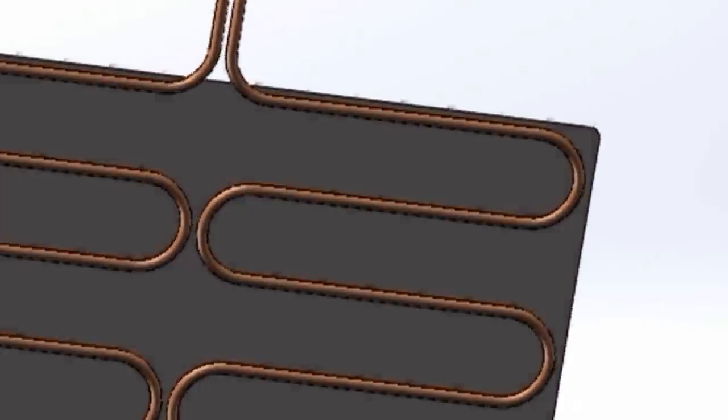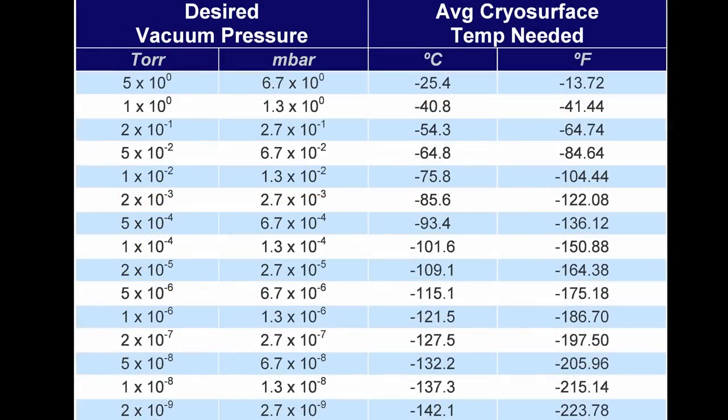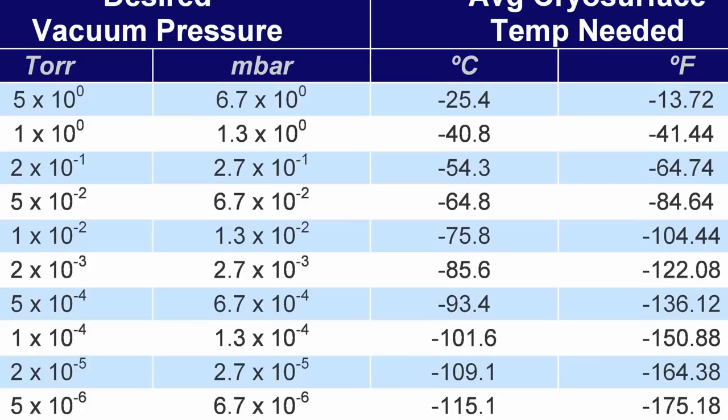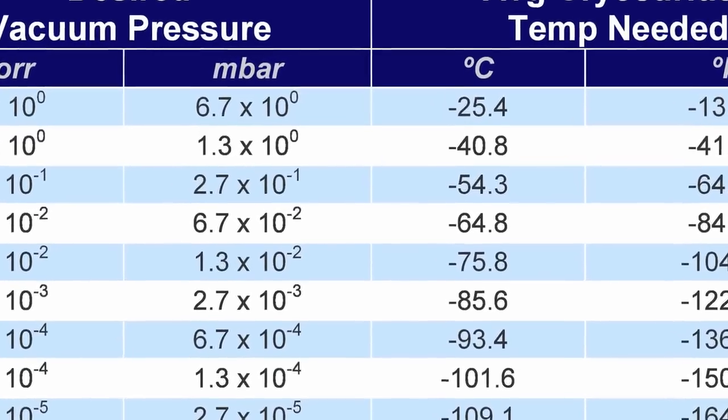These consist of tubing which is often brazed to a backing plate with a large surface area. They pull moisture from the air and greatly increase pumping speeds. The colder the surface and the larger the area, the faster the pump down time.